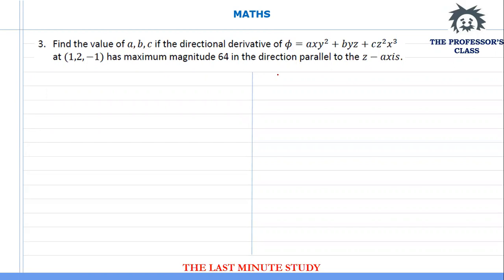Welcome to Maths Tutorial. This is tutorial number 1, vector calculus, and we are at question number 3. In this question we are supposed to find the value of a, b, and c. The directional derivative of the function phi = ax·y² + byz + cz²·x³ at the given point (1, 2, -1) has the maximum magnitude of 64 in the direction parallel to the z-axis.